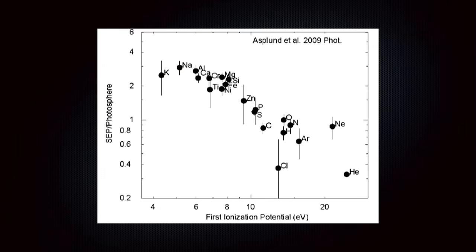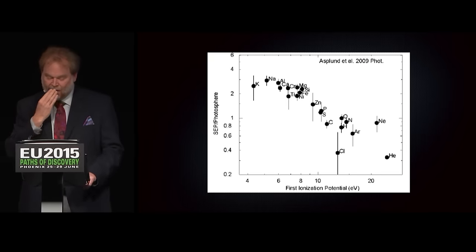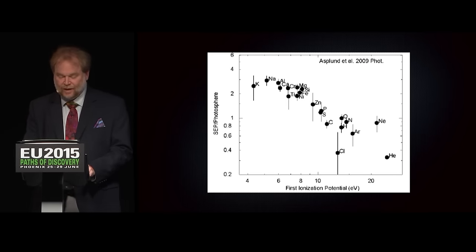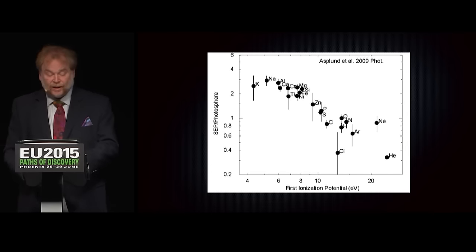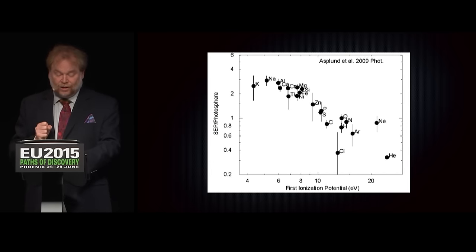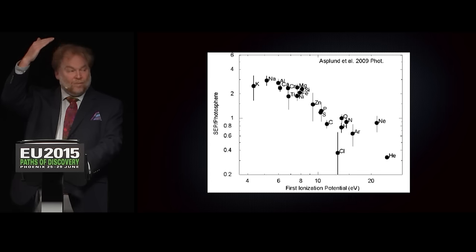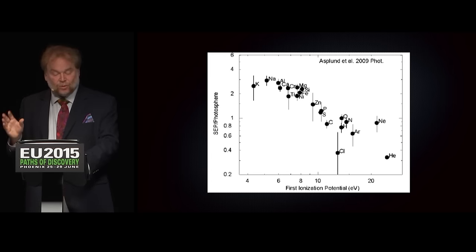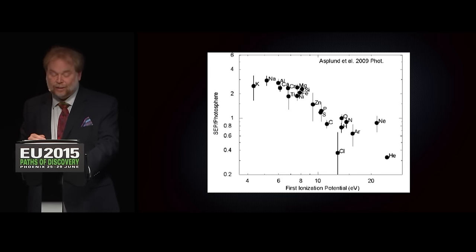Here's a plot of various chemical elements. The horizontal axis shows how easy it is to pull off an electron — about 4 volts to pull the first electron off potassium on the left, all the way to neon and helium on the right where it's really hard. The vertical axis shows how much more likely it is to find that element outside the photosphere. The elements on the left, where it's easy to pull an electron off, are found more abundantly in emissions from the sun. Elements on the right with higher ionization potential are less likely to be found outside the sun.